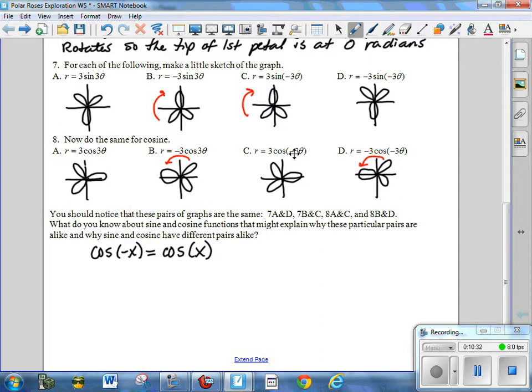So, notice here that 3 cosine of 3 theta and 3 cosine of negative 3 theta are the same thing. Because changing the argument from positive to negative doesn't have any effect on the output. But when I multiply the outside by a negative number, it flips it across. Just like I did with a circle, it made it go the opposite direction with the circles. It does the same thing with the polar roses. But once again, what's inside doesn't make any difference.